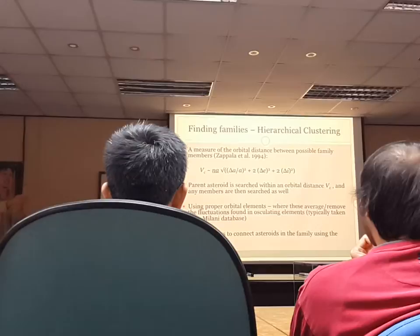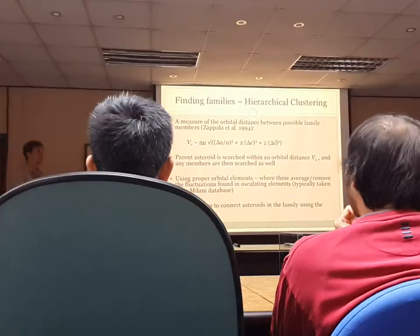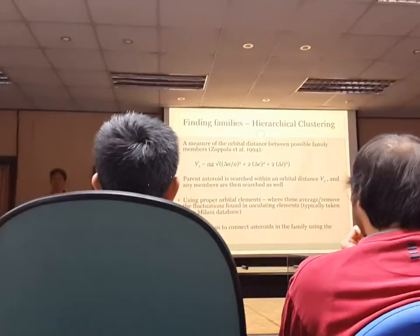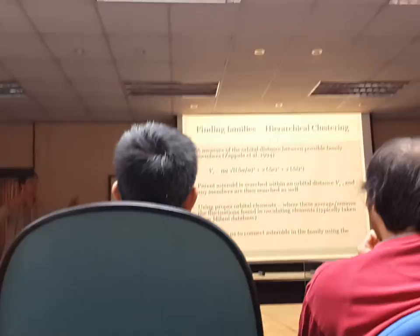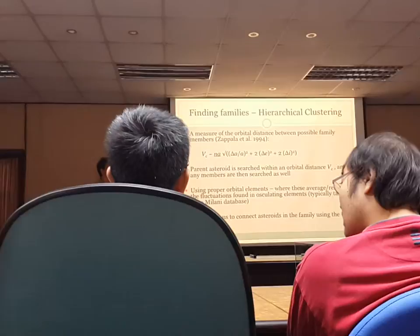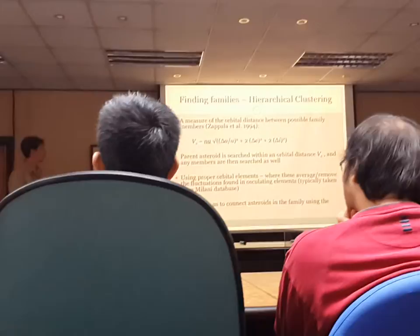We can start at a possible asteroid family parent and calculate around it a small velocity criterion — say 10 meters per second — and see how many asteroids fall within that circle. Then we take all of those asteroids, cluster their neighbors as well, and build a family that are all within a certain velocity criteria of each other. We iterate over larger and larger velocity criteria until we've built a strong cluster.